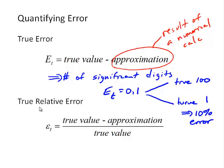And we get that from the true relative error, where we simply take the true error, e_t, in the numerator here, and divide that by the true value.